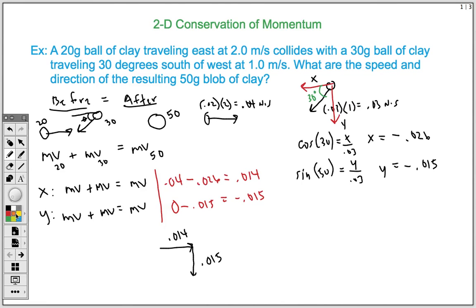We can solve for its total momentum, we can find this resultant vector right here. The way we would do that is use Pythagorean theorem. So 0.014 squared plus 0.015 squared equals c squared. I did the math. c, in this case, comes out to be 0.021. And remember, these are momentum vectors. So that is our total momentum of the 50 gram ball.